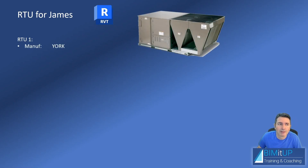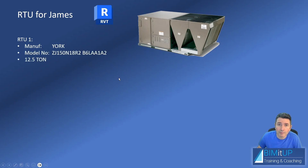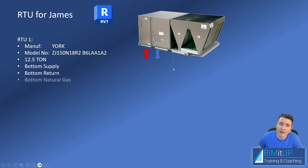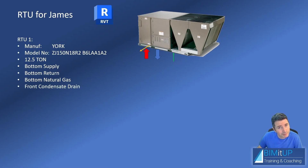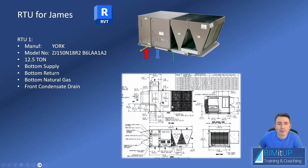In this case, this was RTU one of our project. The unit is a York unit — that's the manufacturer. The model number is the one you see on screen. It's a 12.5 ton unit and it has bottom supply and bottom return for your ductwork. You also have a bottom natural gas inlet.